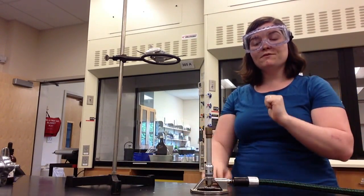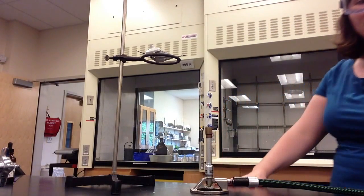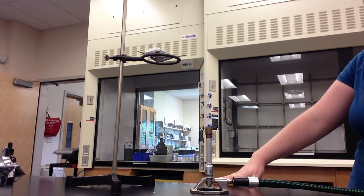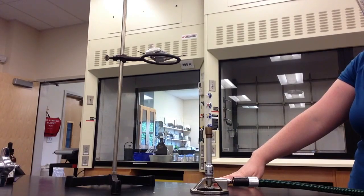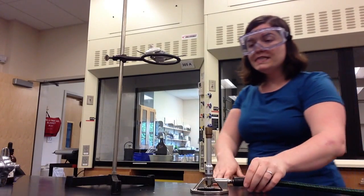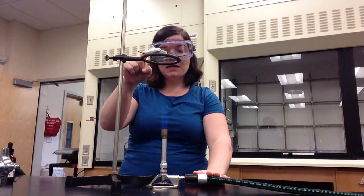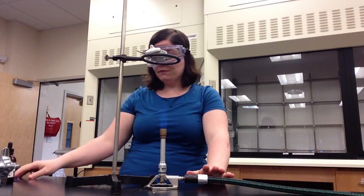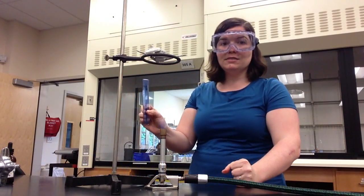I can tell right now the Bunsen burner flame is going to be a little too high, so I'm going to lower it down by closing the handle of the gas. I now have 6 to 8 centimeters distance between the bottom of the crucible and the Bunsen burner flame. If I'd like, I can measure that distance using a ruler.